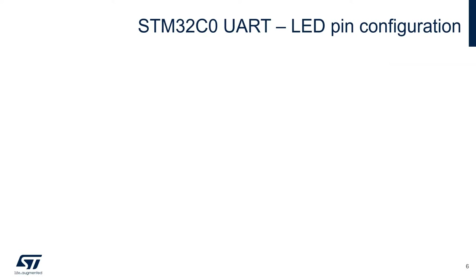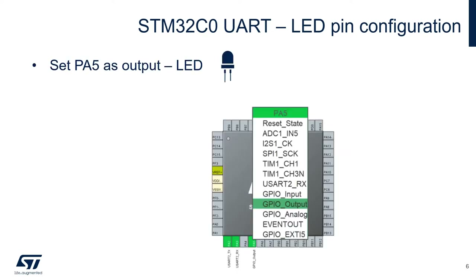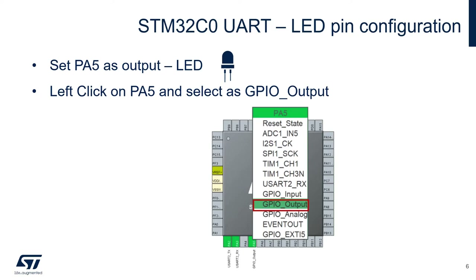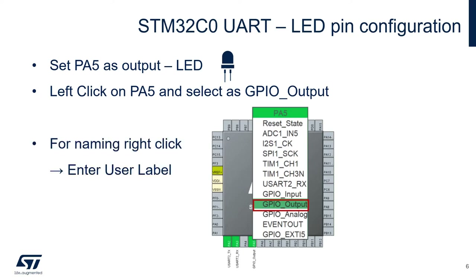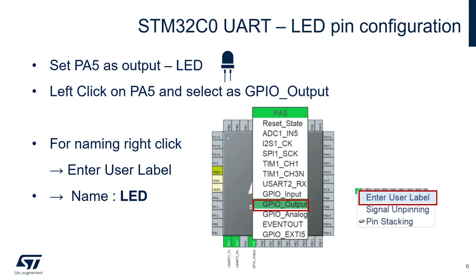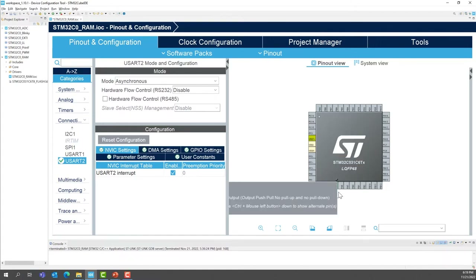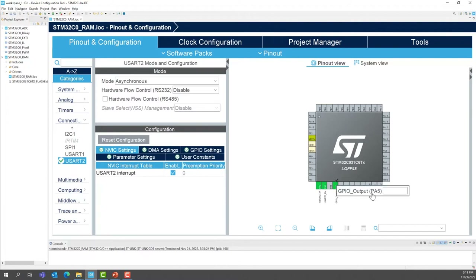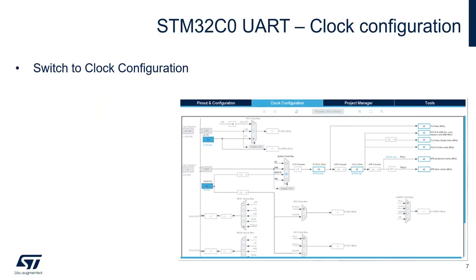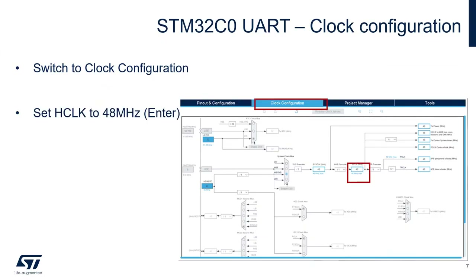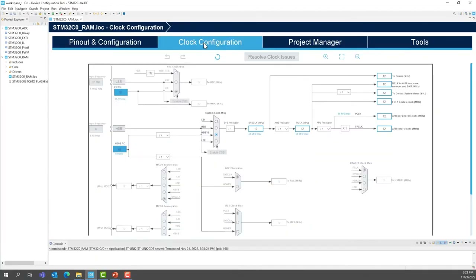Now configure the LED. PA5 is configured as an output — GPIO output — and we'll give it a user label: LED. For the clock configuration, switch to the clock configuration tab and enter 48 MHz for the HCLK, which is the system clock.